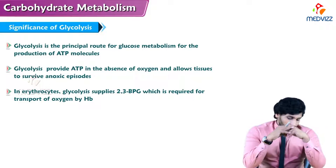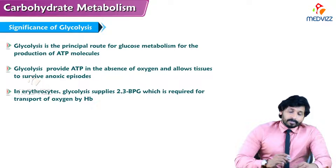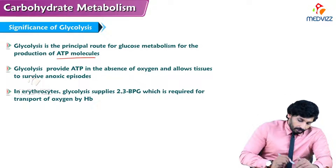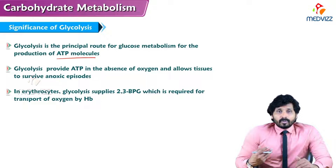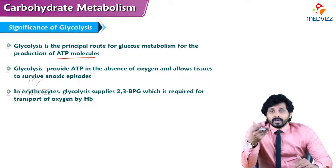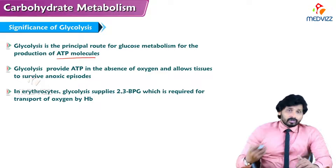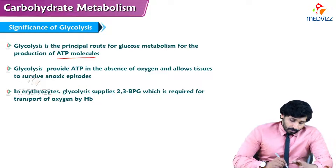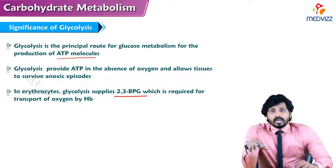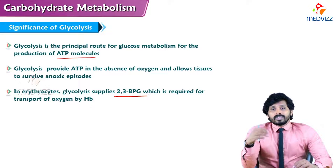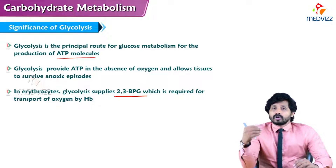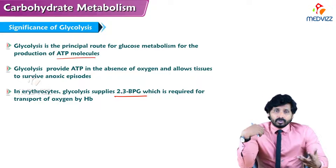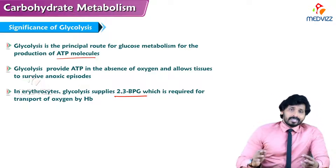Glycolysis is the principal route for converting glucose to other metabolic products along with ATP production. It also provides ATP in the absence of oxygen, allowing tissues to survive anoxic episodes. In erythrocytes, glycolysis is the sole source of energy and also produces 2,3-bisphosphoglycerate (2,3-BPG), required for oxygen transport by hemoglobin.